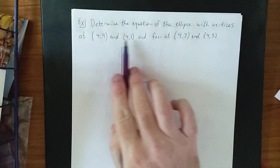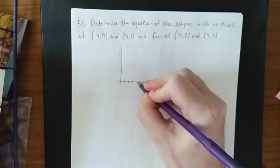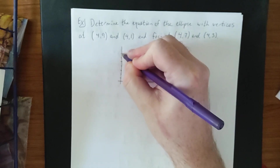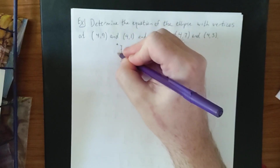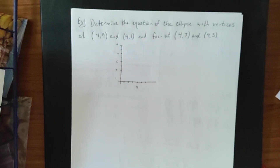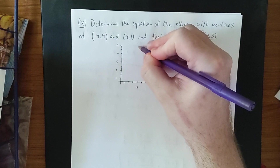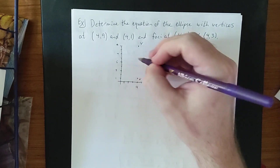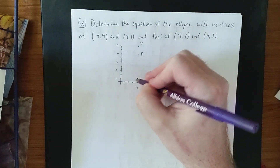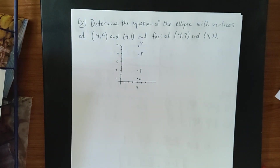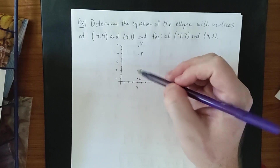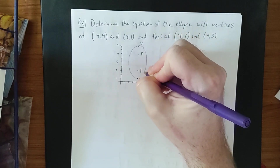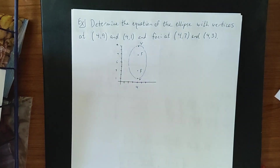Since all coordinates are positive, we draw the Cartesian plane with emphasis on quadrant 1. We have vertices at 4, 9 (top) and 4, 1 (bottom), marked with V. We also have foci at 4, 7 and 4, 3, marked with F. Without co-vertices it's harder to sketch exactly, but the vertices are on the outside, foci on the inside, and co-vertices will be left and right of the center.